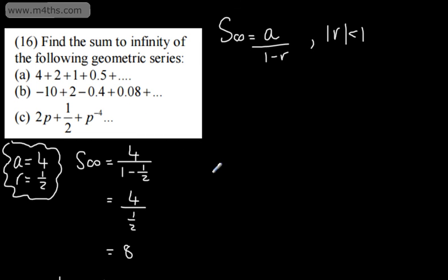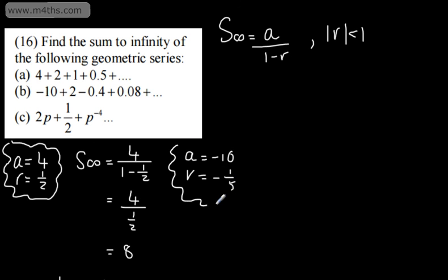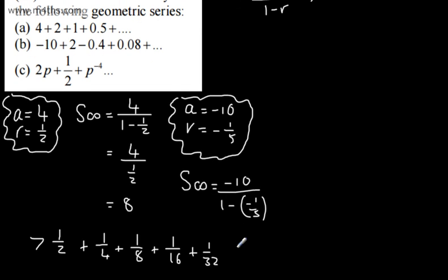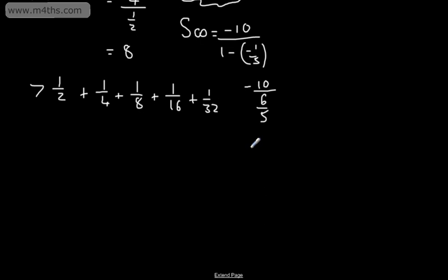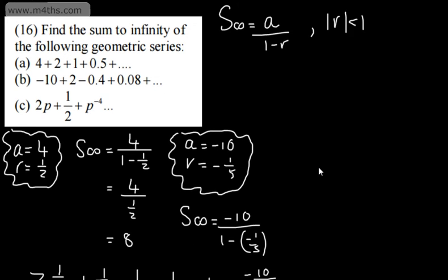Part B: we're finding the sum to infinity, so we just need a and r. A is negative 10, and the ratio is 2 over negative 10, which is negative 1 fifth. Plugging in: sum to infinity equals negative 10 over 1 minus negative 1 fifth, which is negative 10 over 6 fifths. That gives negative 25 thirds, or negative 25 over 3. That is the sum to infinity for this series.